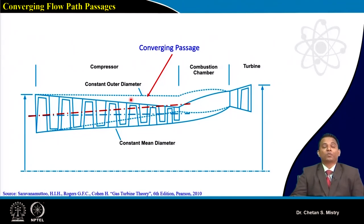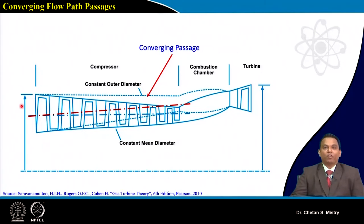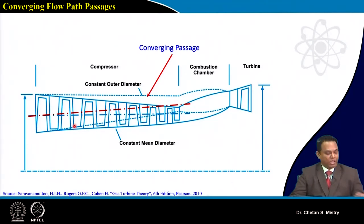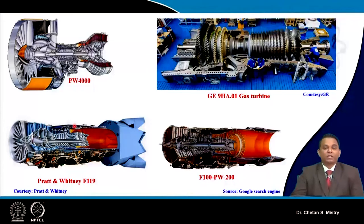The flow track or flow passage shape is very important when doing design for an axial flow compressor. We may be designing the first stage or the last stage, but to have the required dimensions, we need the flow track dimensions. So let us look at this more carefully.